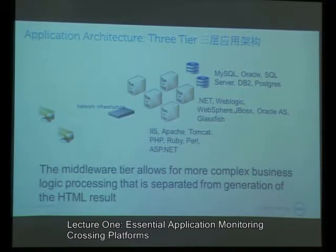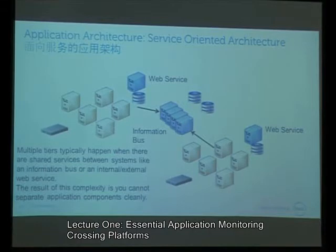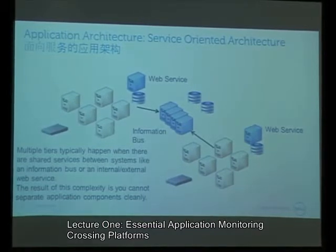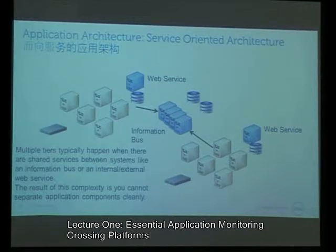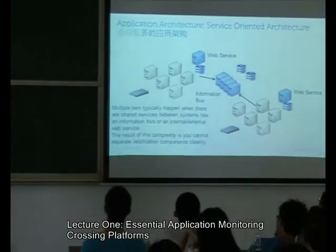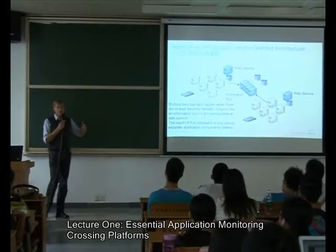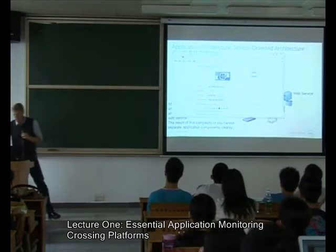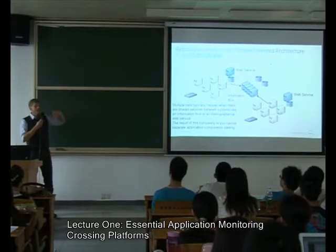The middle tier does more of the complex business processing. In the real world you get the same application structure but applications talk to each other. In a typical company there may be 10 applications communicating over a middle layer called an information bus, which is a way of exchanging data between applications. In some cases that information bus may be used to communicate with applications outside the company's control — calling an external API on the internet, or having an agreement with a company like Salesforce.com to store certain data there and make API calls to retrieve it.